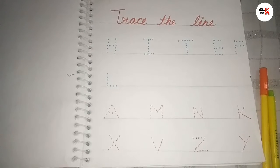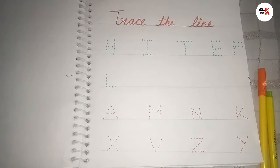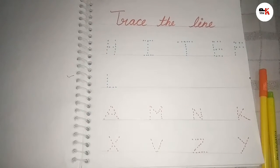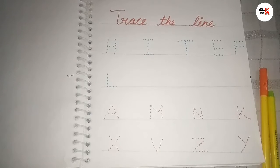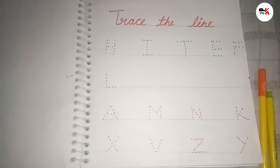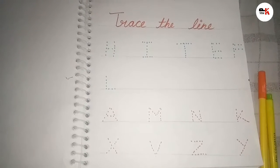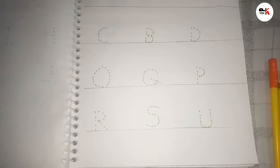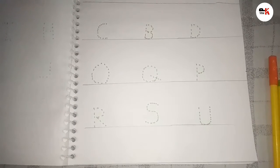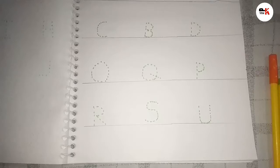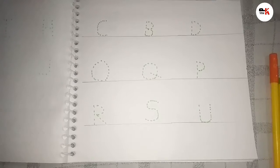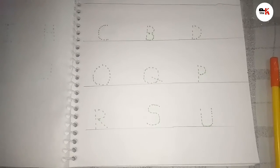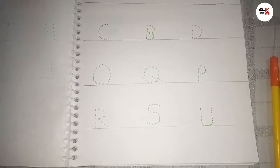This is about sitting and sleeping letters. Slanting line letters are written as A, M, N, K, X, V, Z, Y — these are slanting line letters. Now you can see this includes curve, slanting, and straight line letters. Curve and straight line letters are C, B, D, O, Q, P, R, S, U.